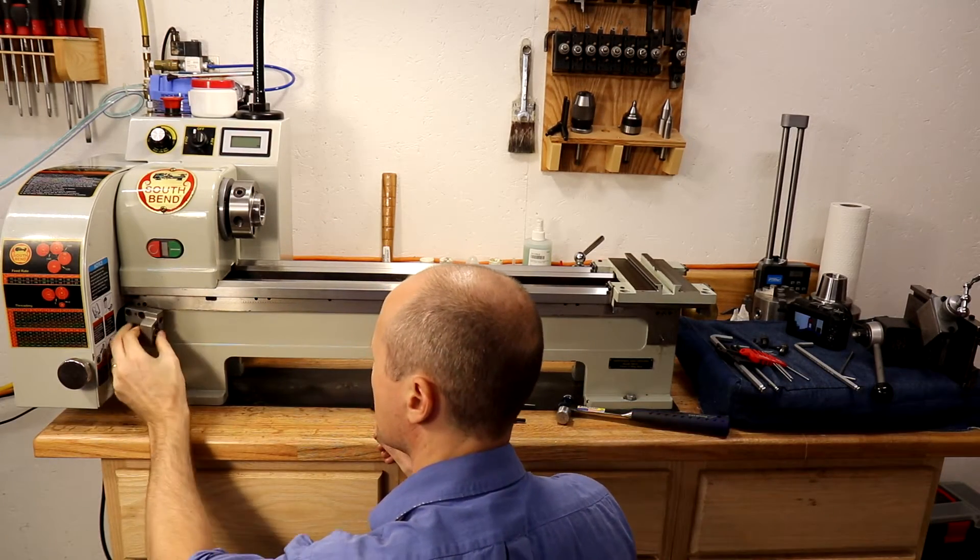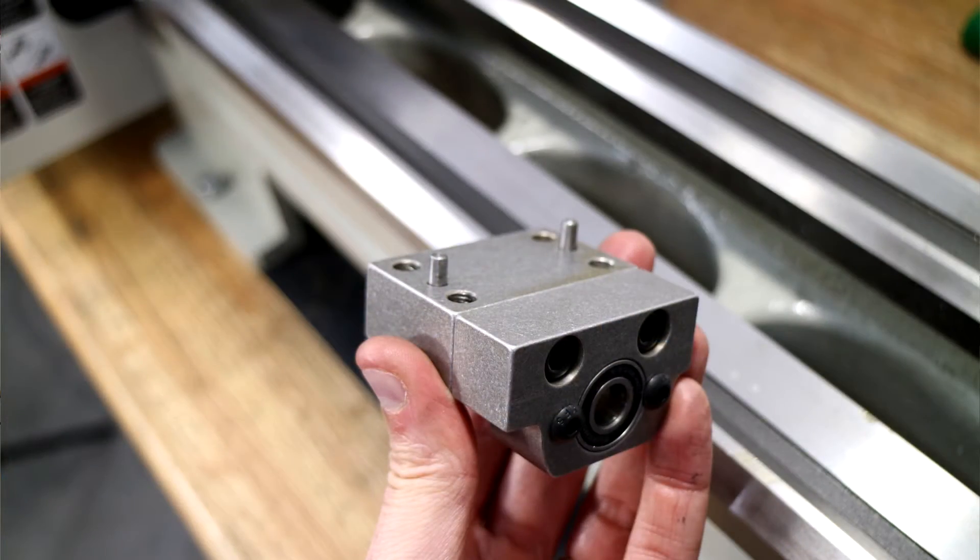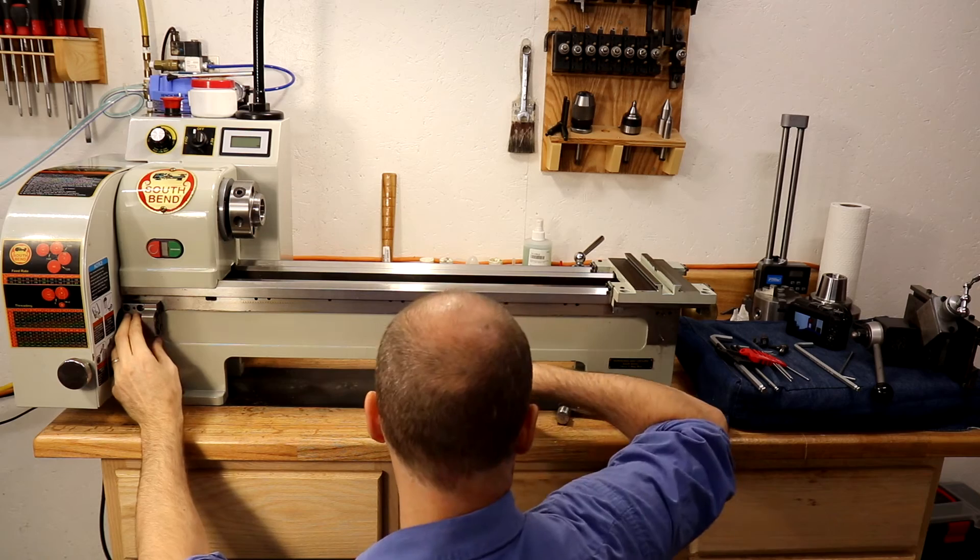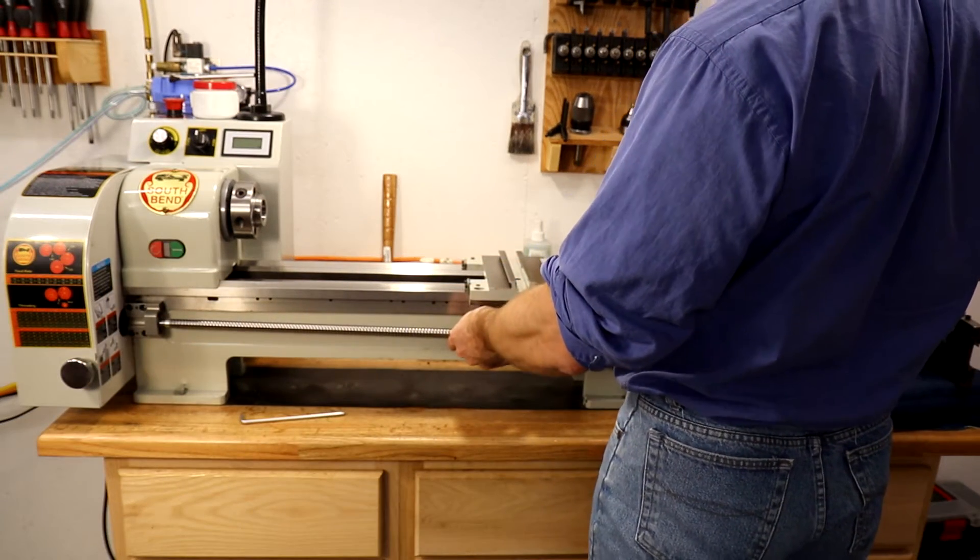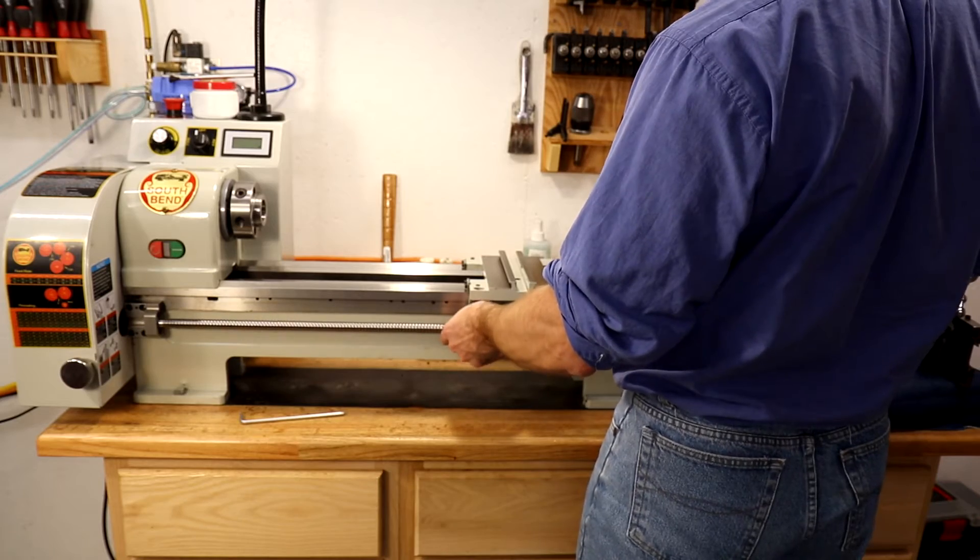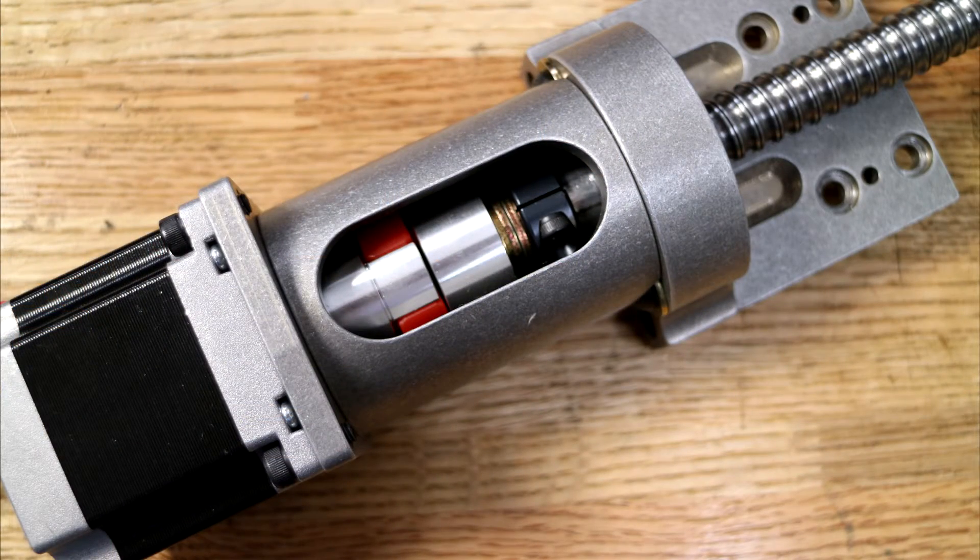I start with the headstock side support of the longitudinal ball screw. The original tapered pins are driven through and used to align the support. In all but a couple places on the conversion, I was able to use the original holes and screws. Billy has obviously gone to great lengths to ensure this kit is easy to install.